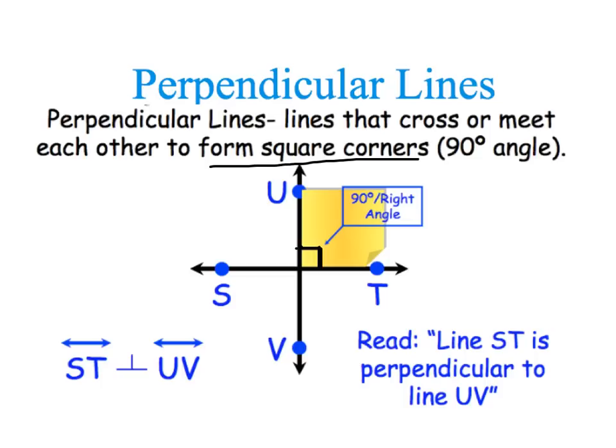And you would read this as line ST. See it right here? Line ST is perpendicular to line UV. And that is written like this. You can see line ST and line UV. And the perpendicular sign is this little upside down T that proves that they cross at a right angle.